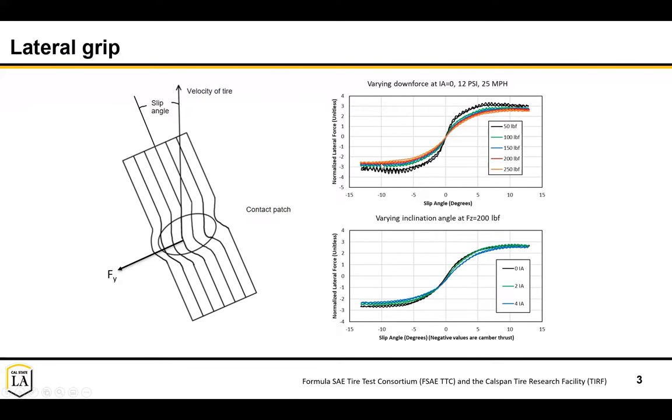You should typically multiply these values by about 0.6 to mimic what you would see on the typical asphalt surface you'll be racing on. So these 2.5 areas of normalized lateral force will more likely look like around 1.1 to 1.7 in those cases.